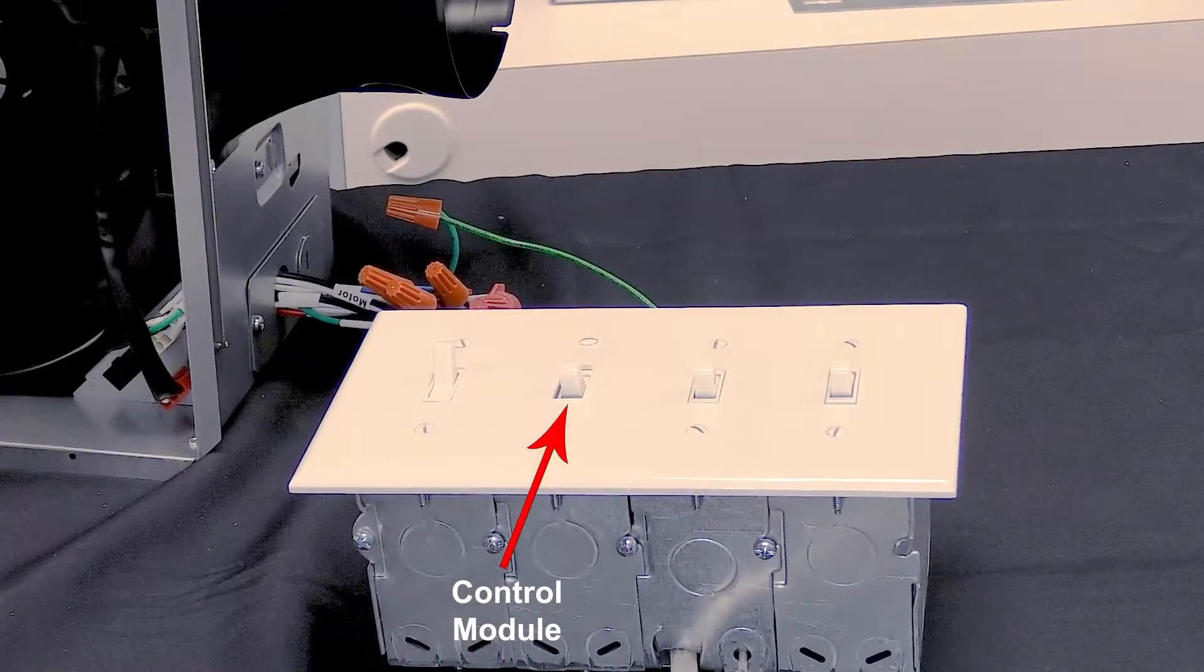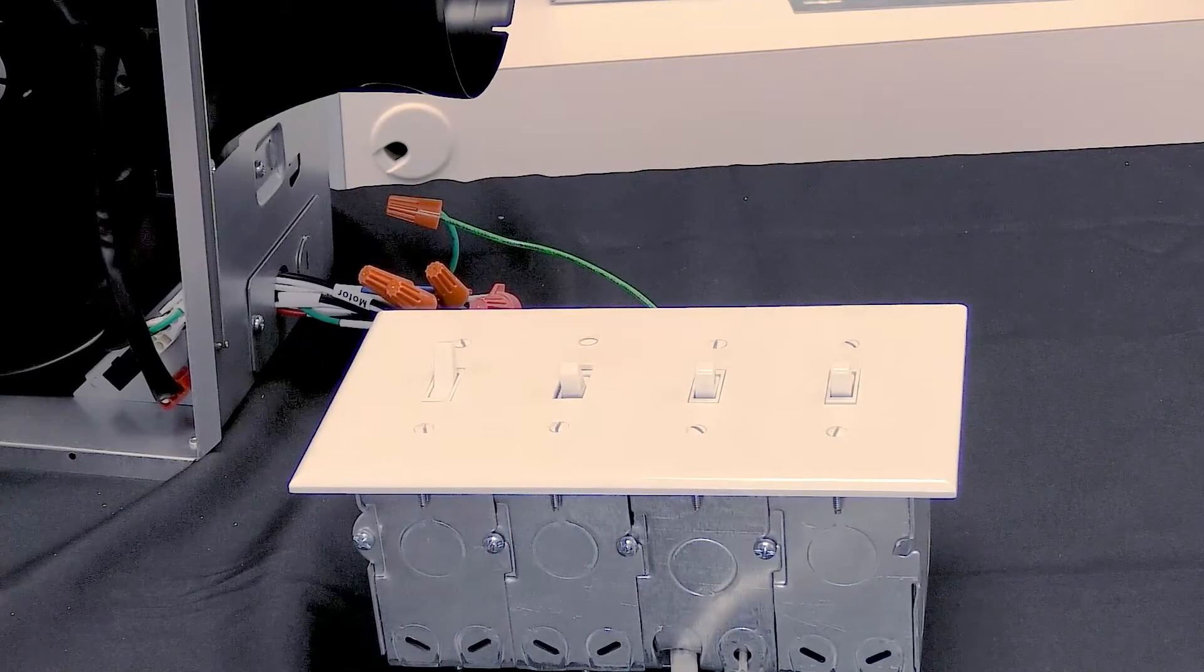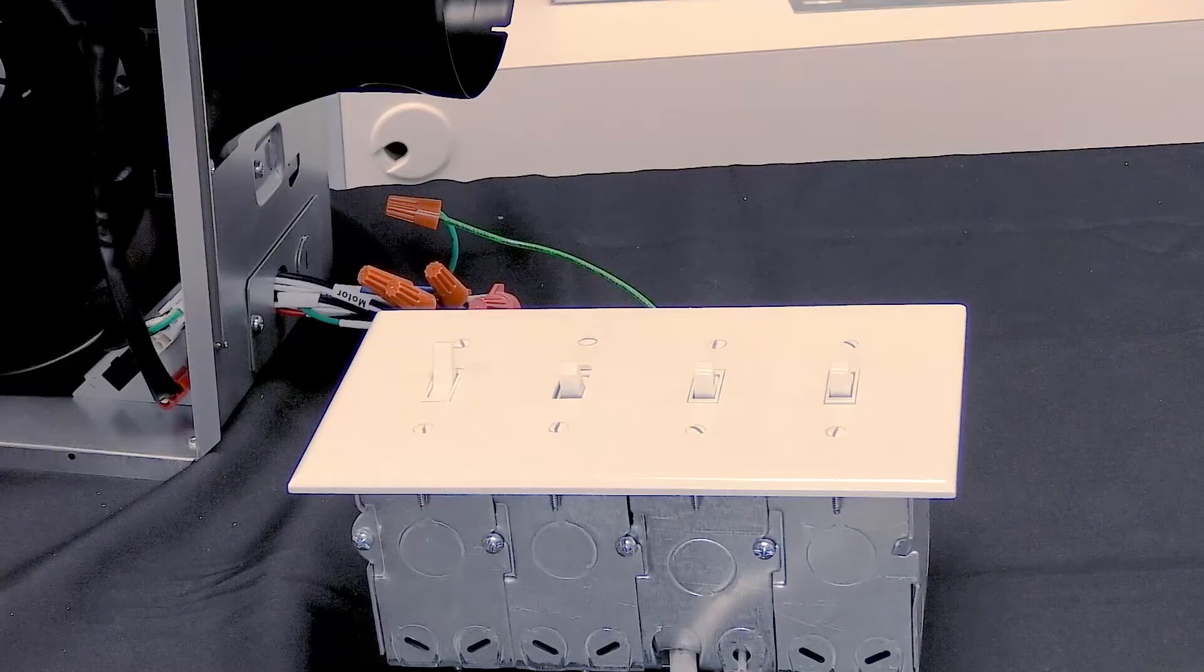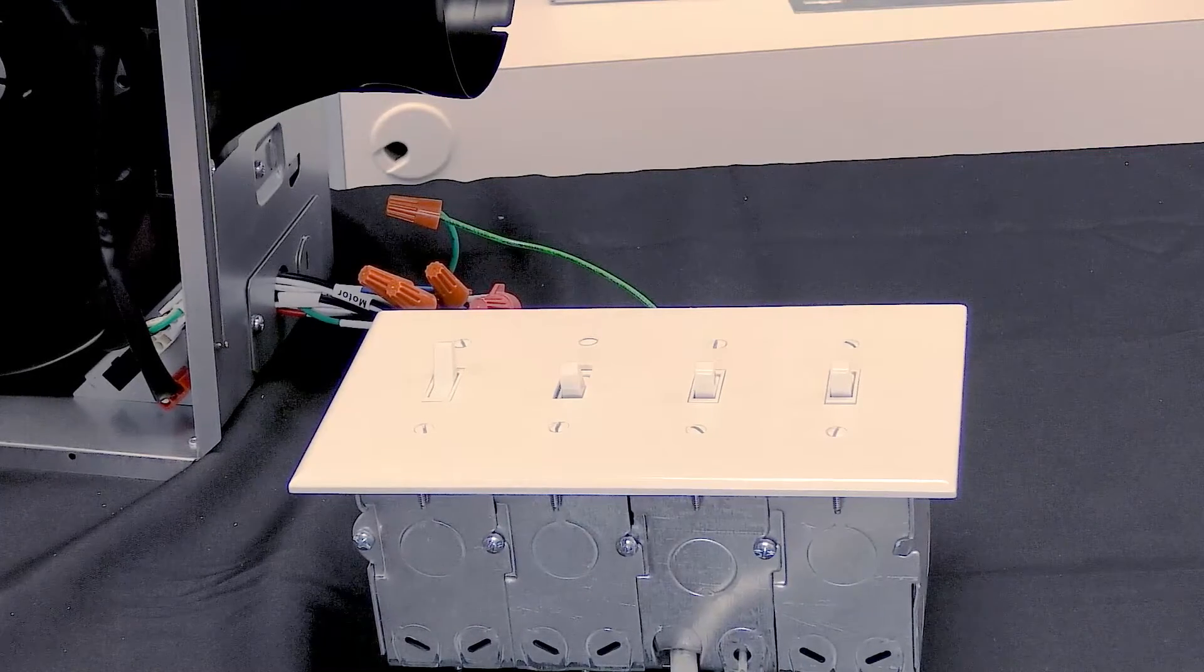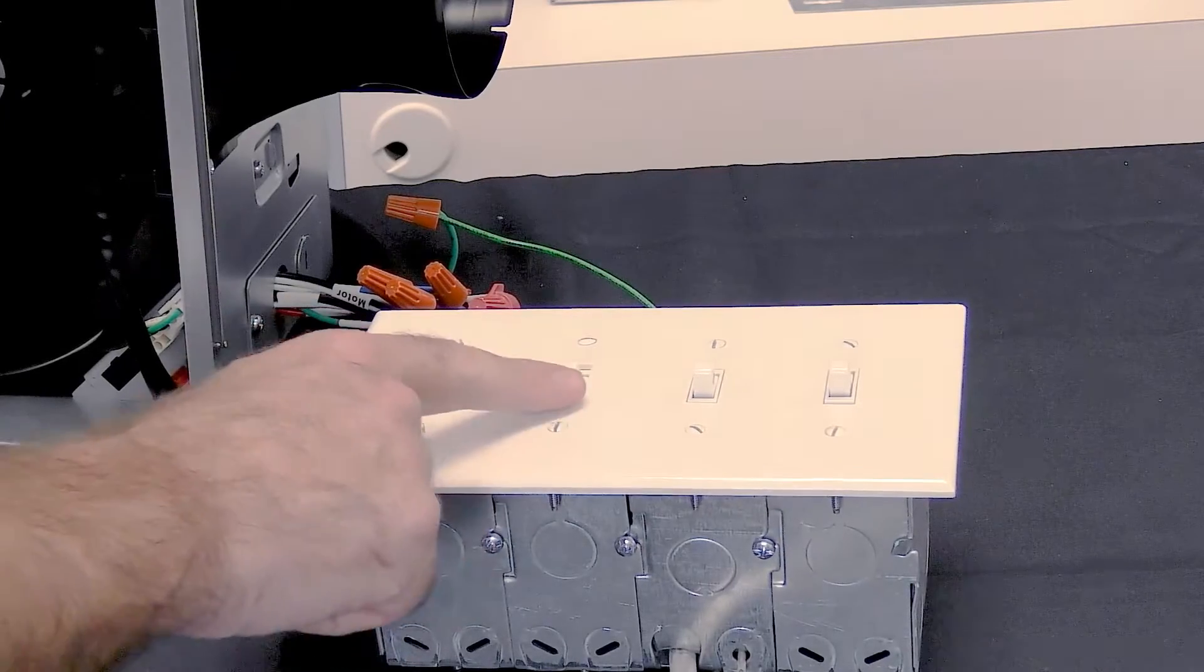The switch associated with the control module operates the plug-and-play module of your choice. It is wired to the brown wire of the control. This example, we are using the motion and humidity control.